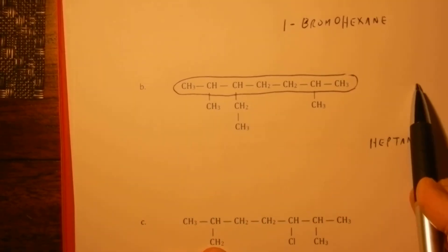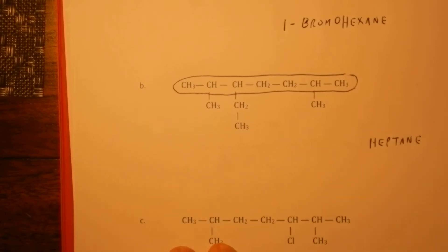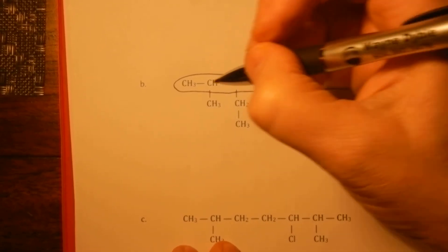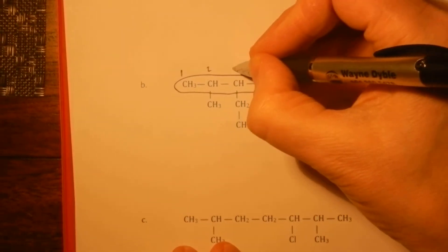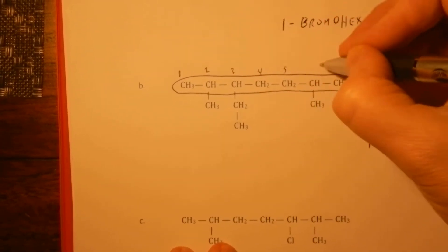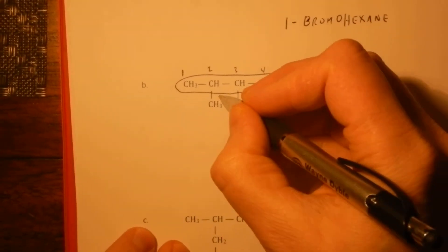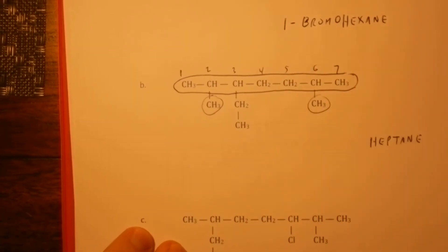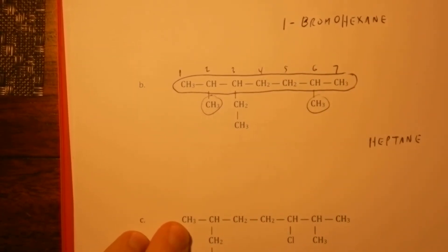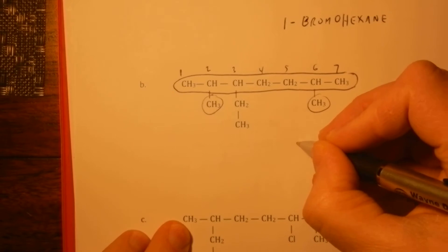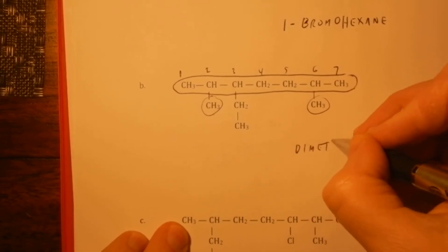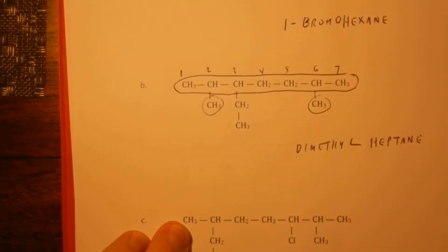I can see I'm better off numbering from the left than the right. It's going to give me lower addresses. And so I'm going to call it carbon one, two, three, four, five, six, seven. I can see I have a methyl here and a methyl here. Each of those are methyls, so that becomes a dimethyl.